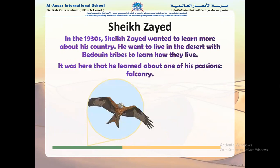In the 1930s, Sheikh Zayed wanted to learn more about his country. He went to live in the desert with the Bedouin tribes to learn how they lived. It was here that he learned about one of his passions: falconry.